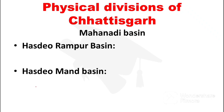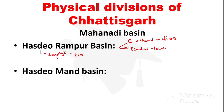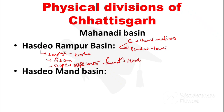Next we will see Hasdi or Rampur Basin. In this basin, to the east you will find Churi-Matringa Hills, and to the west you will find the Pendra Lormi Plateau. Its expansion is from Sarguja and Korwa. The mean height is about 450 meters and its slope is toward the south. Hasdi-Rampur Basin is known for coal reserves and has significant mineral deposits.